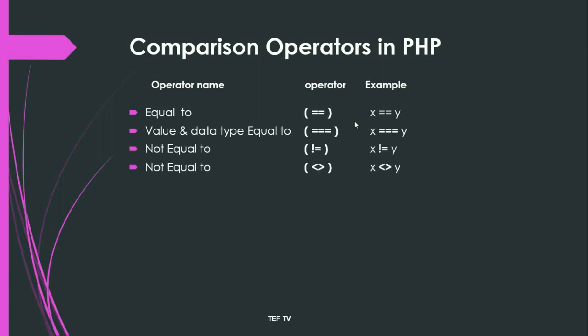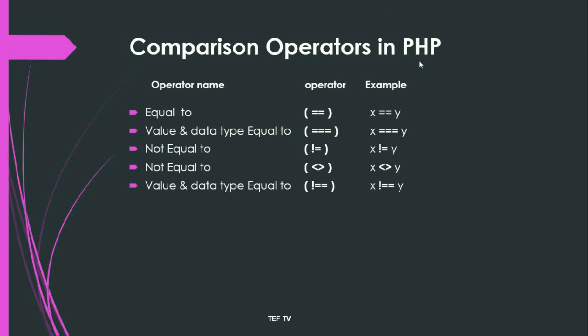Then we have not equals to (!=). Not equals to can be used with two different notations: either you can use the exclamation mark with equals to (!=), or the less than greater than symbol (<>) to check that the values of x and y are not equal. Then we have not identical (!==), which is the opposite of triple equals to (===). In this operator we check whether the value and data type of two variables are not equal.